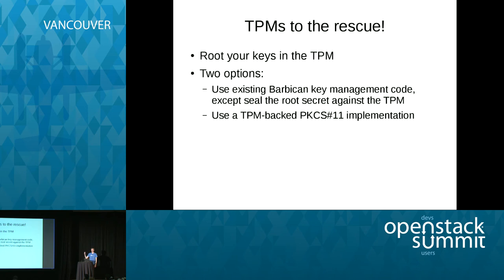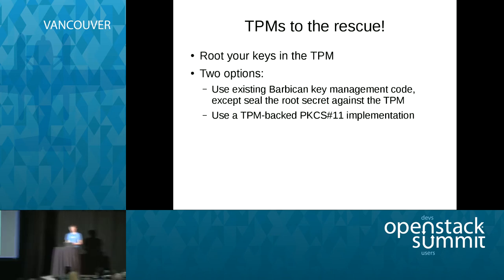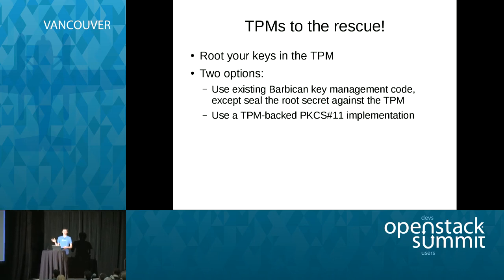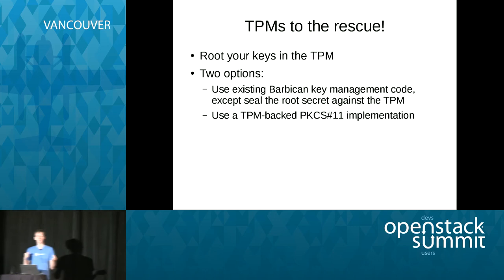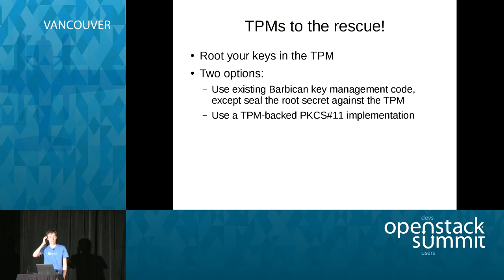TPMs help here because you can root your key in the TPM. If someone steals a disk, all they have is a secret that can only be decrypted by the TPM — and TPMs aren't hot-swappable. There are two ways to implement this. First, you can use the existing Barbican code and instead of reading a key from a config file, make another call to pull a secret out of the TPM — that's about a three-line change to Barbican, assuming you have the infrastructure for key provisioning. The alternative is to use a TPM-backed PKCS#11 implementation. PKCS#11 is a specification defining how software talks to hardware cryptography devices, abstracting the specific hardware implementation.